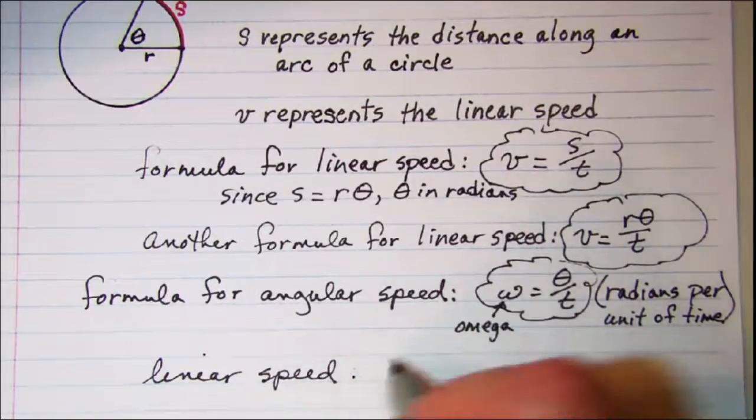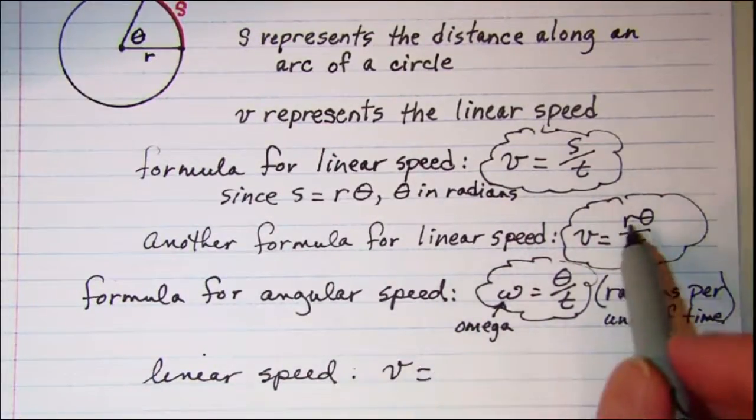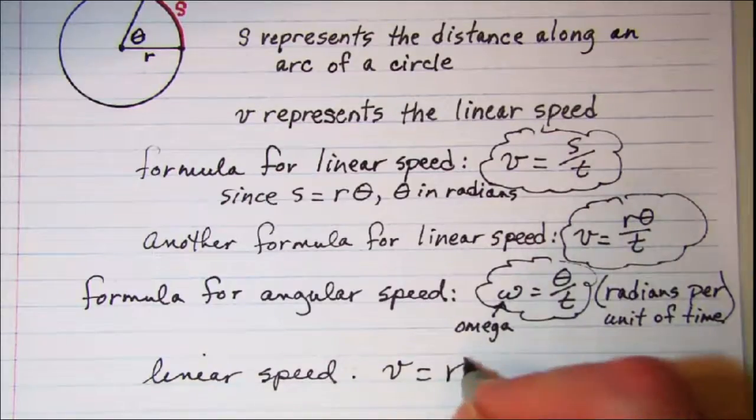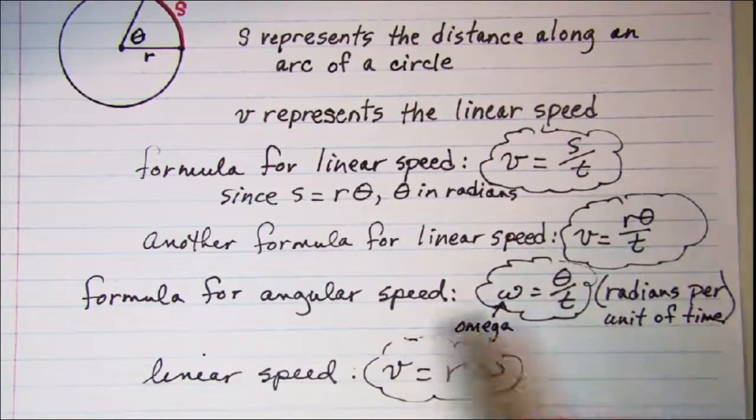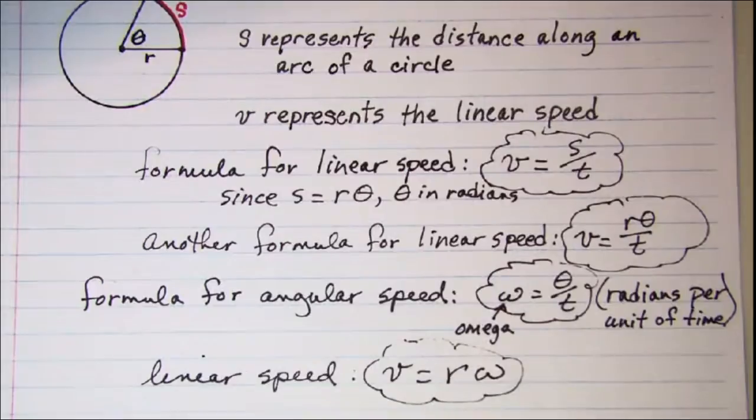We get velocity is equal to r times the angular speed, omega, so this is my third linear speed formula.